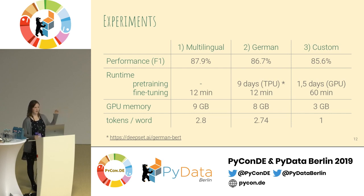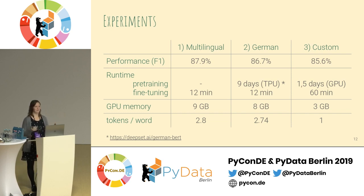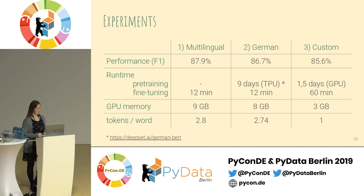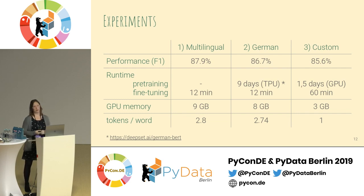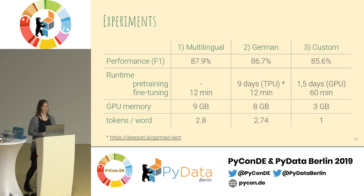I also looked at how many tokens each word gets split into on average, and I was a little surprised to see there's not even such a big difference between the English, multilingual, and German models — at least on my data. Maybe there were just too many phone numbers and prices that get tokenized in a language-independent way. In the last column you can see my custom model — the performance is worse, but it's also nice to see it's not that far off. I spent more or less one and a half days of pre-training on a single GPU, and fine-tuning took about an hour to converge to good performance.